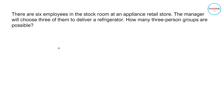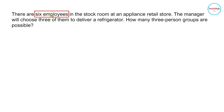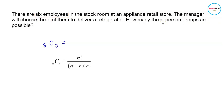There are six employees in the stock room at an appliance retail store. The manager will choose three of them to deliver a refrigerator. How many three-person groups are possible? Notice that the order does not matter — the manager just picks any three people from the group of six employees. Therefore, this is a problem on combination: C(6, 3).